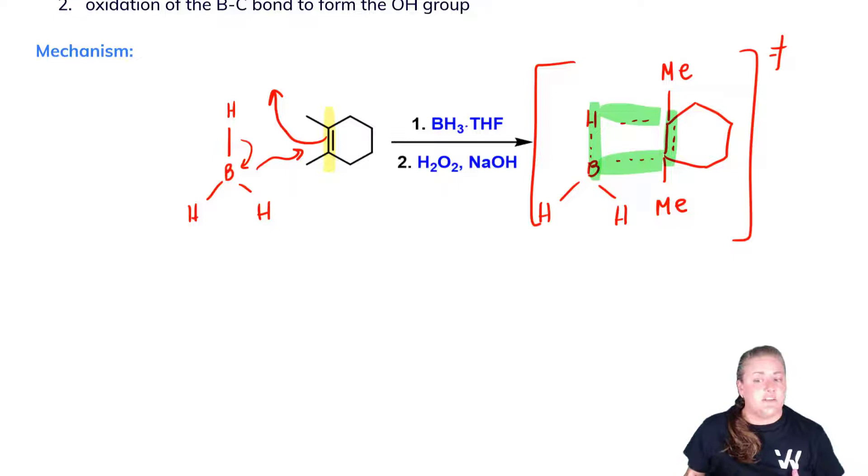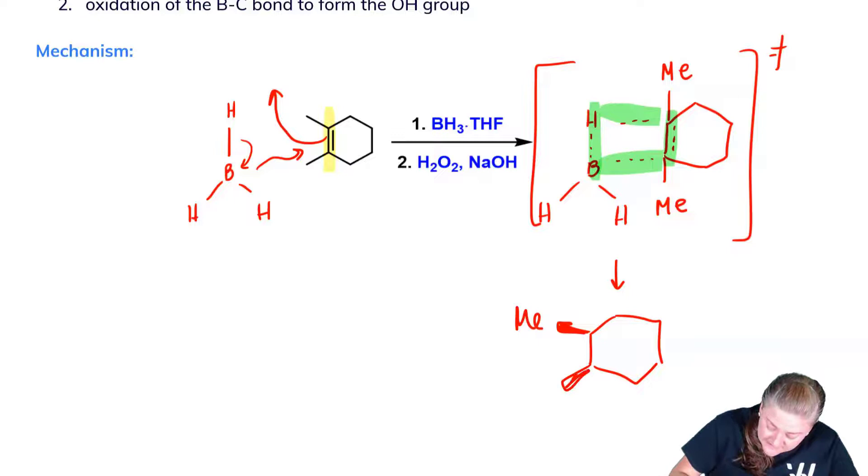Because of this constrained geometry, we have syn addition—addition of the H and B on the same side. It's entirely because this ring is so constrained geometrically. For that reason, we generate this product from the hydroboration part of the reaction, where both methyl groups are on the same side, and the hydrogen atoms and BH2 are on the same side.